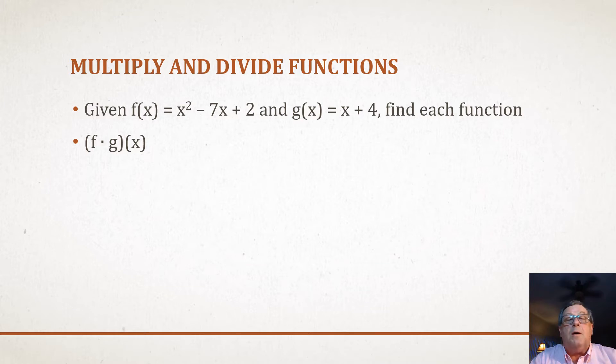We've got f(x) = x² - 7x + 2 and g(x) = x + 4. Find each function. The first one here we're multiplying: f times g of x.